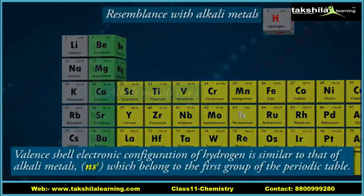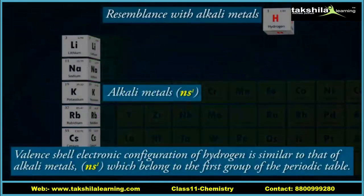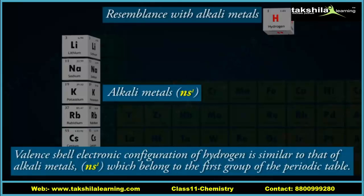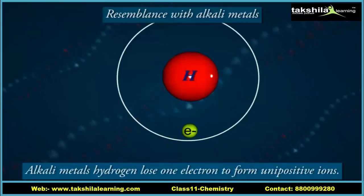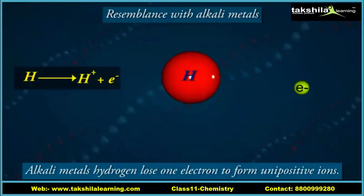Hydrogen's valence shell electronic configuration (ns¹) is similar to that of alkali metals, which belong to the first group of the periodic table. Like alkali metals, hydrogen loses one electron to form unipositive ions (H⁺).